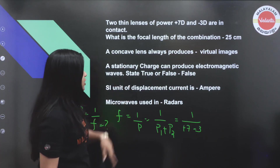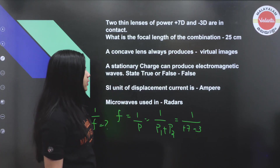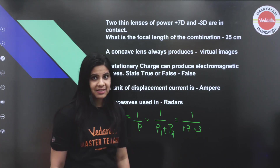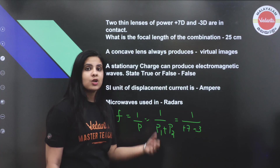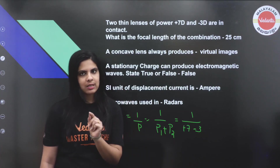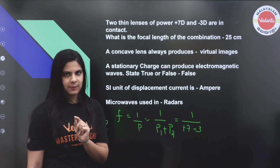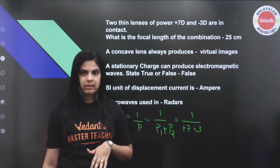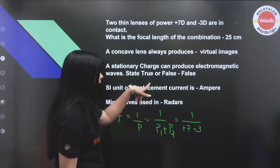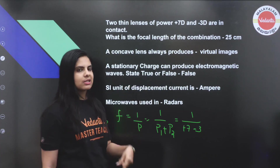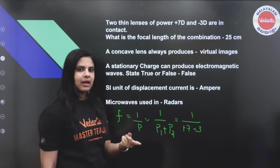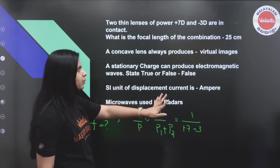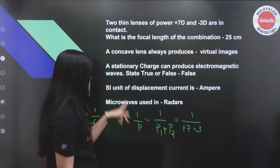The statement 'a stationary charge can produce electromagnetic waves' is false — stationary charges cannot produce electromagnetic waves. True or false questions like this are expected in exams.